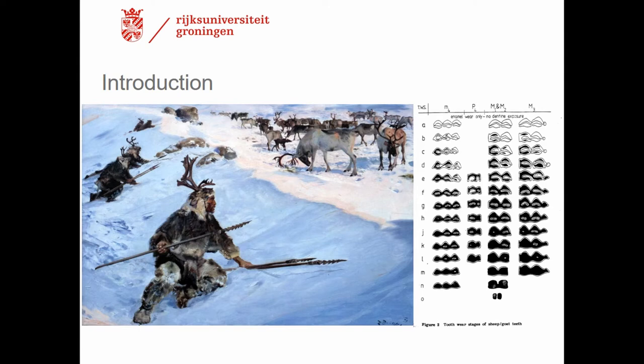Aging methods based on dental wear and eruption patterns do exist for reindeer, but not in the form of an easy-to-use scheme such as the famous one for sheep and goats by Grant from 1982, which you can see on screen and is widely used. The methods for reindeer have been criticized for a high degree of subjectivity and for promoting very narrow age classes that can't hold up when tested. Some studies on reindeer mortality even resort to using sheep/goat schemes because they are so easy to use, which shows the urgency of developing a new cheap, easy way to estimate age of death in reindeer.